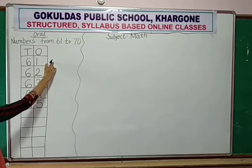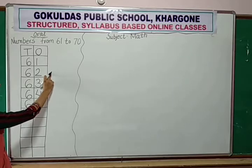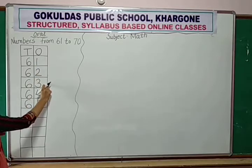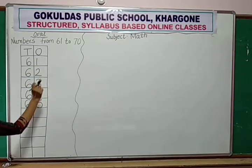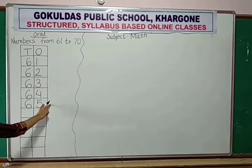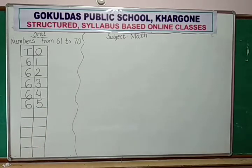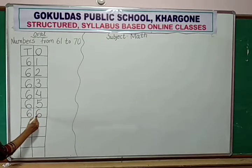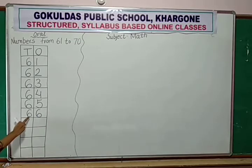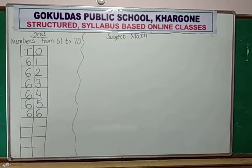Repeat after me. 6, 2, 62. 6, 3, 63. 6, 4, 64. 6, 5, 65. Now after 65, which number will come? After 65, 66 will come. And how to write 66? 6, 6, 66.